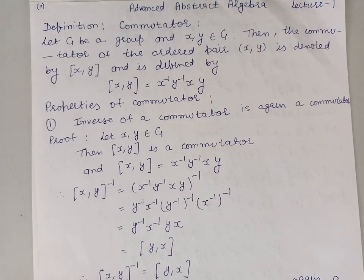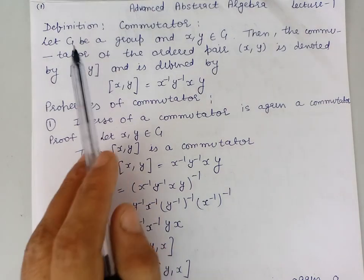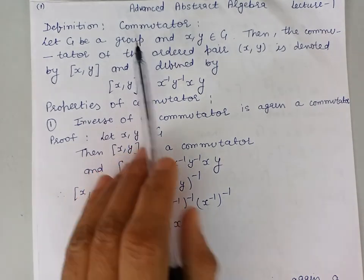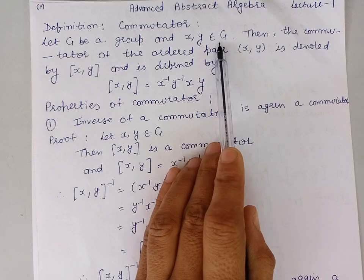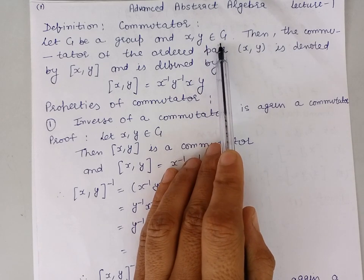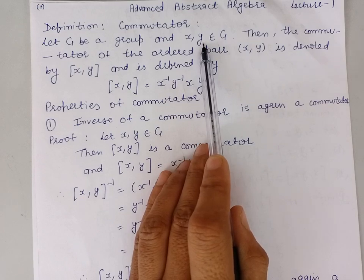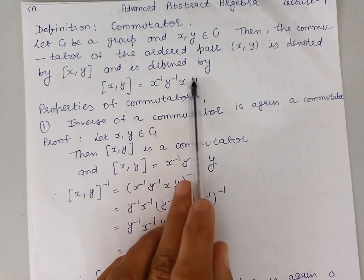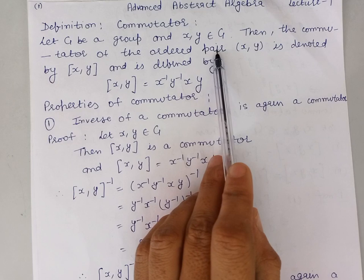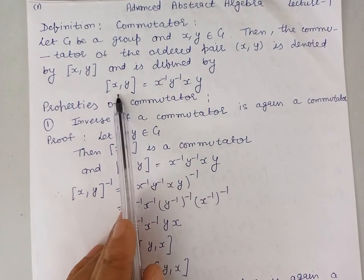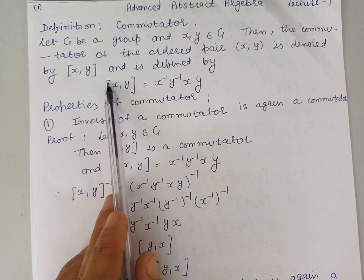Good morning students. Your first paper is Advanced Abstract Algebra and today we will start Section 1. Our first topic is commutators. Let us define the commutator of an ordered pair of elements in a group. Let g be a group and take two elements x and y belonging to g. Since x and y belong to g, their inverses x inverse and y inverse also belong to g, so we can form the element x inverse y inverse xy, which is again an element of g. This element is called the commutator of the ordered pair (x, y) and is denoted by the symbol [x, y].